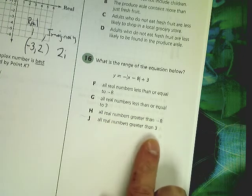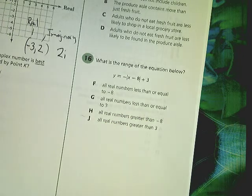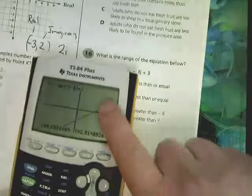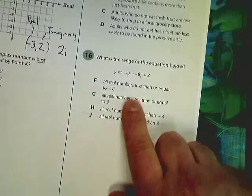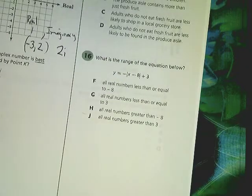And j says all real numbers greater than 3. Well, if it was greater than 3, all the line would be above this number. But it's not. It's all below. So, it's got to be g as the correct answer for 16.